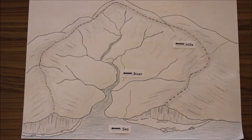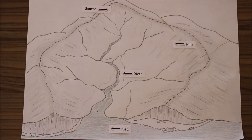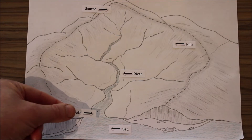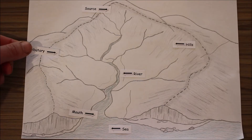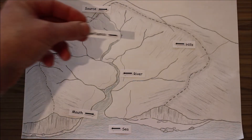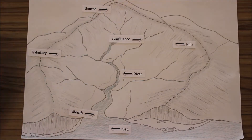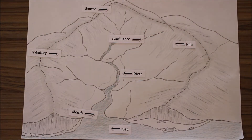Now a few important words. Where a river starts is known as the source. Where a river ends and meets the sea, that is the river mouth. A smaller stream or river joining a larger one is known as a tributary. And the place where two rivers or streams actually join each other is known as a confluence — so here, two streams join each other, that is a confluence.